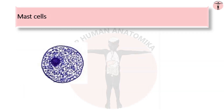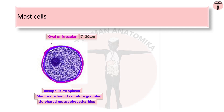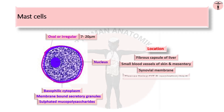Mast cells are oval or irregularly shaped connective tissue cells, 7 to 20 micrometers in diameter. The cytoplasm is basophilic, filled with membrane-bound secretory granules produced by sulfated mucopolysaccharides. The nucleus is centrally placed but is often obscured by secretory granules. They are located in the fibrous capsule of the liver, small blood vessels in skin and mesenteries, which are called perivascular mast cells. They are also present in synovial membrane and tissues lining the gastrointestinal and respiratory tracts, called mucosal mast cells.